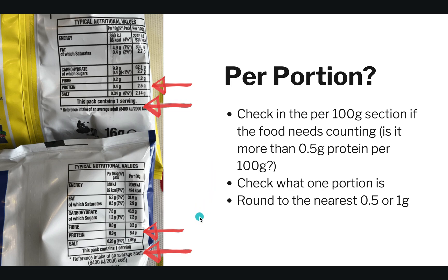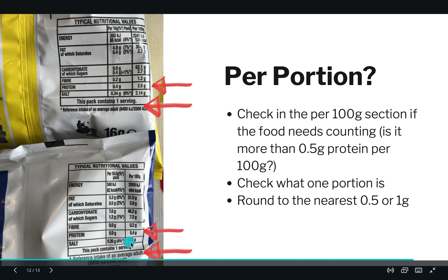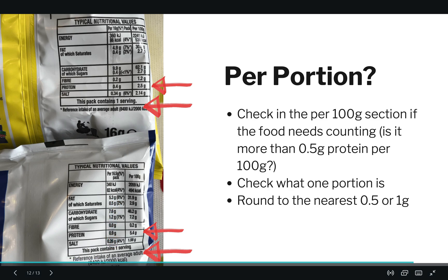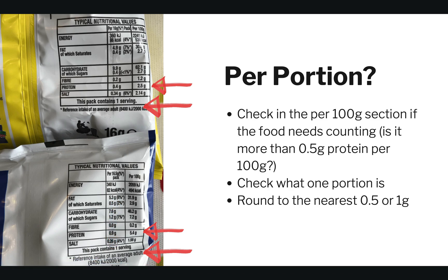For the second packet of crisps, per 100 grams there is 5.4 grams of protein, so we need to count it as exchanges. We check that this packet contains one serving, and looking at the serving size the protein is 0.9 grams — we round that to 1 gram, or 1 exchange, so that packet is 1 exchange.